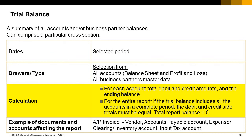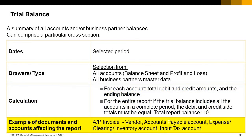When you issue the trial balance, for each account the system presents the total debit and credit amounts and the ending balance, calculated as debit amount minus credit amount. For the entire report, if the trial balance includes all accounts in a complete period, the debit and credit side totals must be equal — that is, the total report balance should be zero. An example of a document affecting the trial balance is an AP invoice, which includes the vendor, the accounts payable account, a clearing or inventory account, and the input tax account.